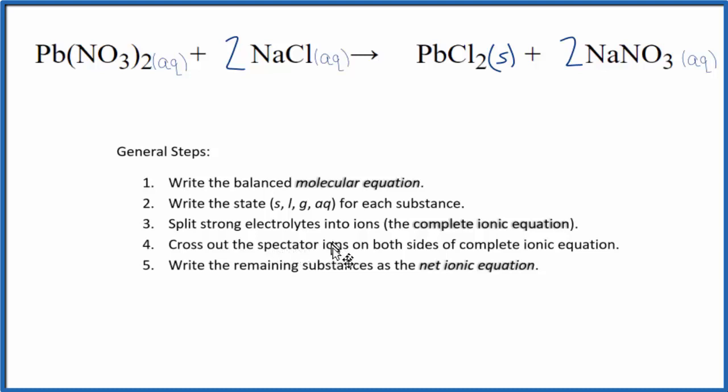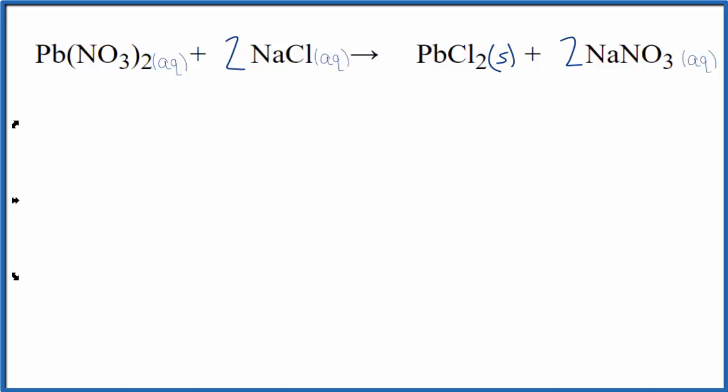So next we need to split the strong electrolytes up into their ions. After that, we'll cross out the spectator ions and that'll give us our net ionic equations. So let's move these here out of the way.